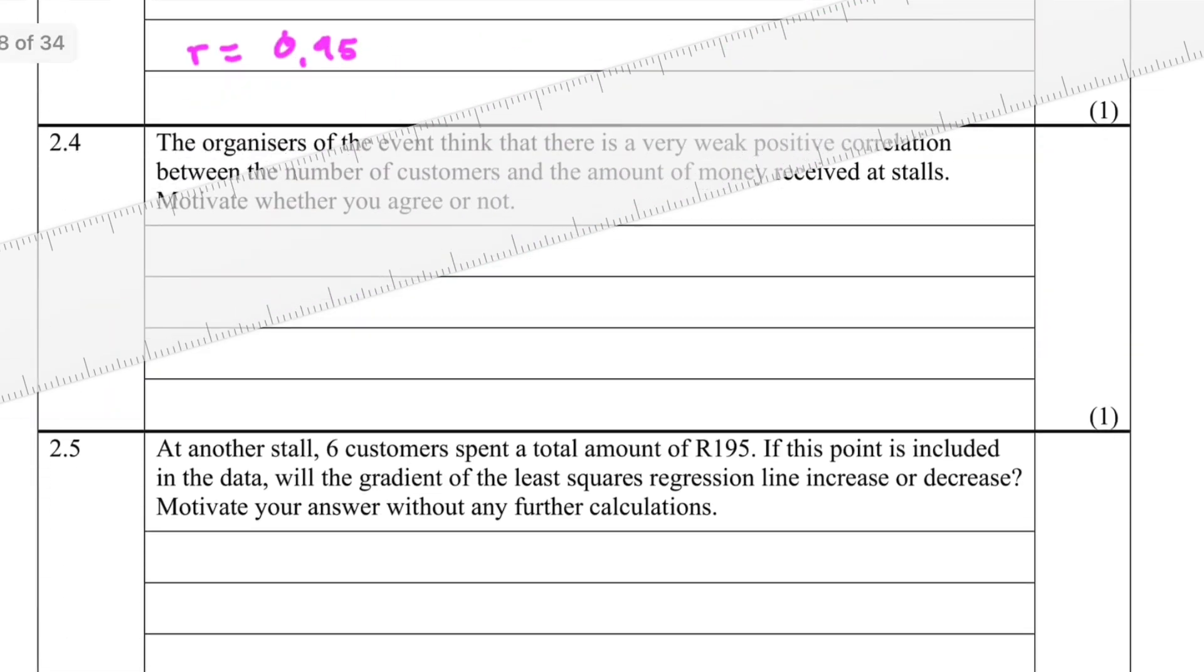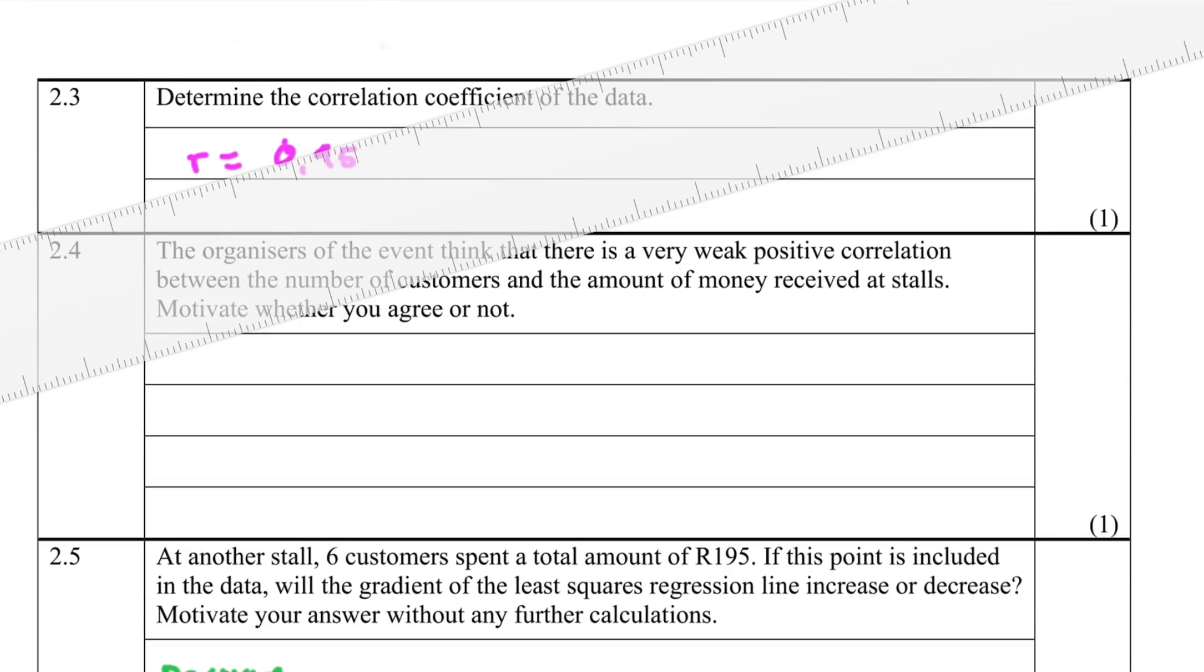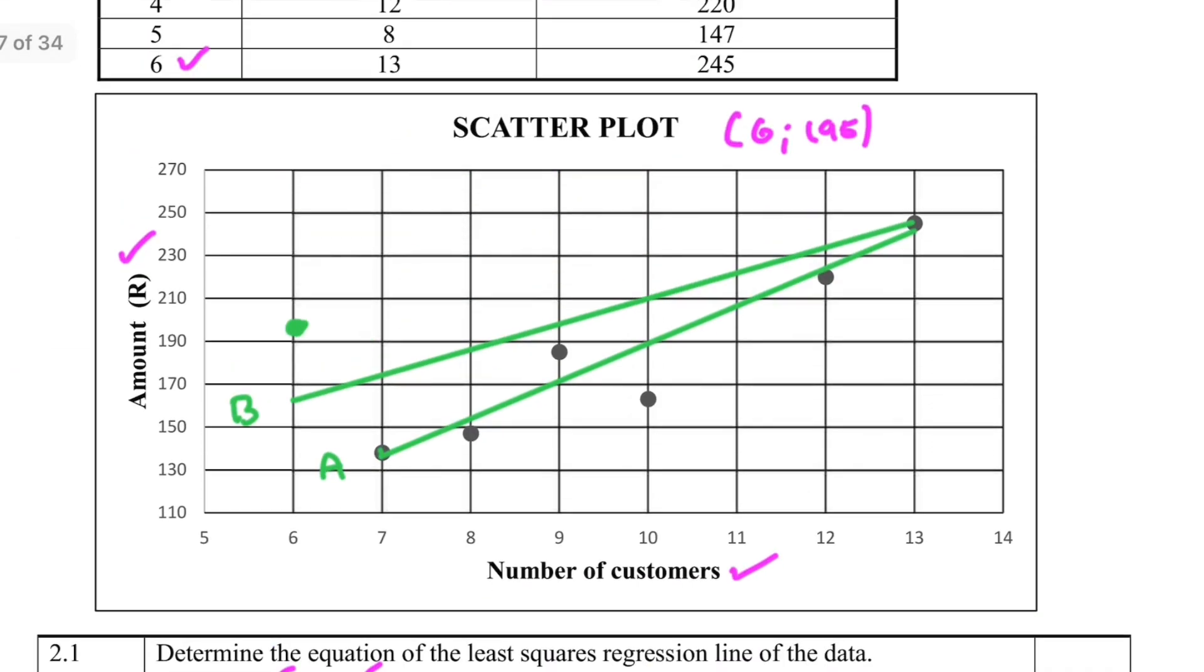What is the question saying? Will the gradient of the least squares regression line increase or decrease? It will decrease. And then why are we saying that it is going to decrease? The point that is now added, it's way above all the other points. It's way above all the other points for its corresponding x value. For its corresponding x value, it is way above there. It is an outlier, so to say. So we would expect the gradient to now be gentler compared to initially when it was steep.